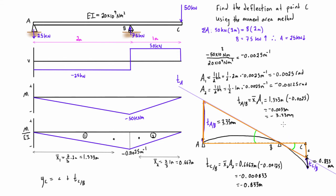Using similar triangles, we have 3.33 millimeters over its base of 2 meters equals little c over its base of 1 meter. Cross-multiplying gives us little c equals 1 times 3.33 divided by 2, so little c equals 1.667 millimeters. Adding little c and the tangential deviation of C with respect to B together gives us a total deflection Yc of 2.5 millimeters.